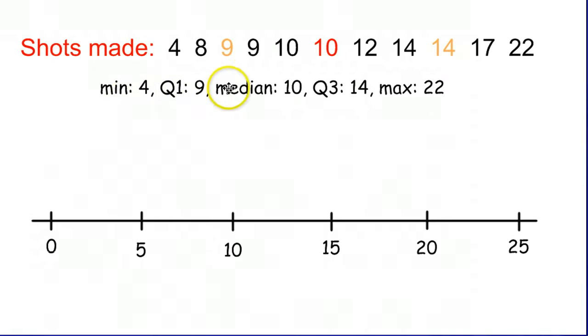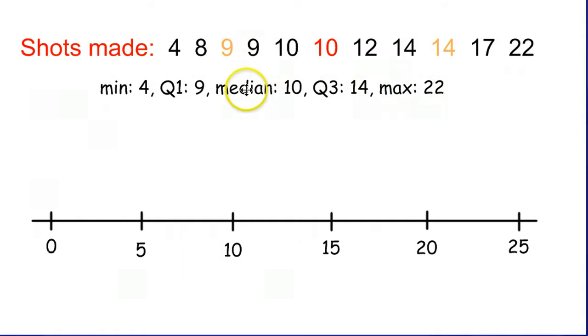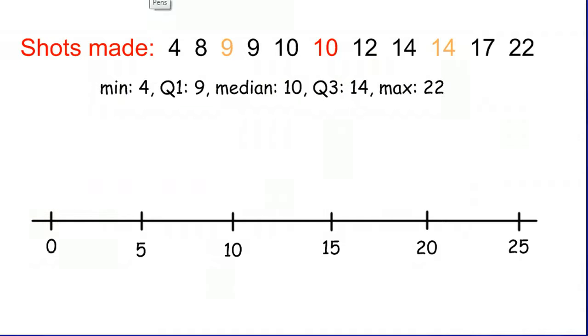The five number summary consists of the minimum, quarter one, median, quarter three, and max. Your calculator just tells you these things, and now what you do with those is you plot each of them on a number line.